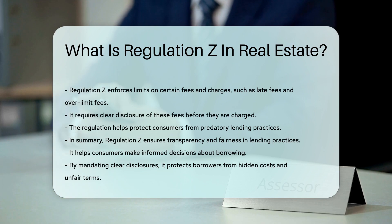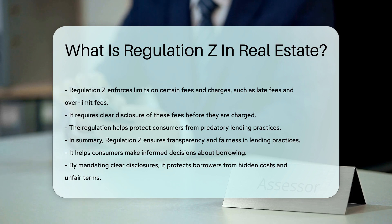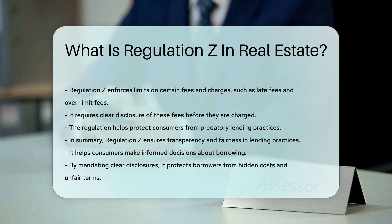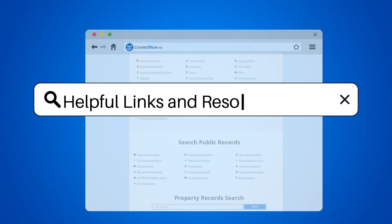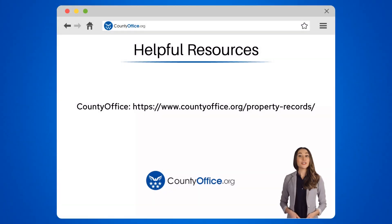In summary, Regulation Z ensures transparency and fairness in lending practices. It helps consumers make informed decisions about borrowing. By mandating clear disclosures, it protects borrowers from hidden costs and unfair terms.